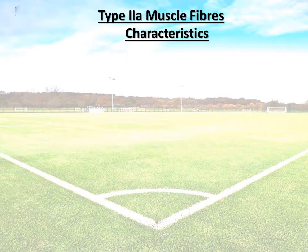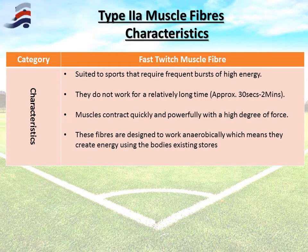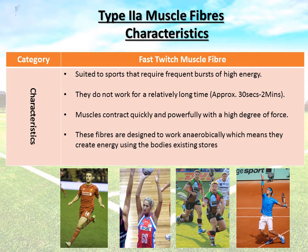Type 2A is categorised as a fast twitch muscle fibre, suited to sports requiring frequent bursts of energy that might go on for a long period of time, like a 90-minute football game with frequent sprints and tackles. These muscle fibres work for maybe 30 seconds to 2 minutes before needing recovery time. They contract quickly and powerfully with a high degree of force, and work anaerobically — creating energy using existing stores within the body. Best suited to games players: footballers, netballers, rugby players, and even tennis players who must explosively serve but sustain a rally.